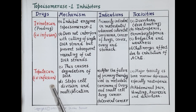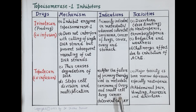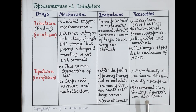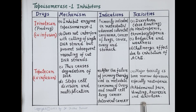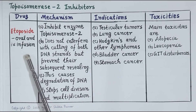Another topoisomerase 1 inhibitor is topotecan. Topotecan is also given by IV infusion. After the failure of primary therapy, topotecan is used in the treatment of metastatic carcinoma of the ovary and small cell lung cancer. It is also used in cervical cancer. The major toxicity of topotecan is bone marrow depression, especially neutropenia. Abdominal pain, vomiting, anorexia, and diarrhea can also occur.